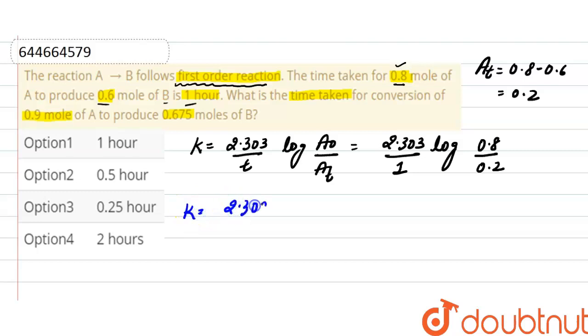Now moving on to second data: 2.303, time taken we have to find out, log of initial concentration is 0.9 moles, and here final concentration will be from 0.9 mole, this much product is formed, so 0.9 minus 0.675 is the final concentration and that equals 0.225.